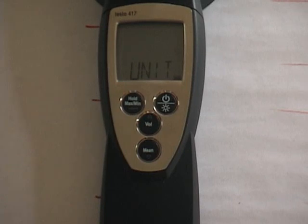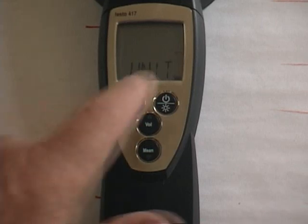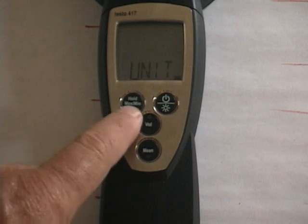Then we toggle to units. You can use the volume center key here and toggle through the different units of measurement. We're using feet per minute, so it's got FPM flashing and that's what we want.